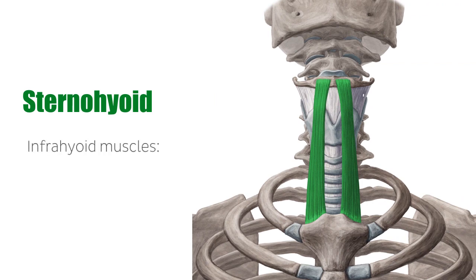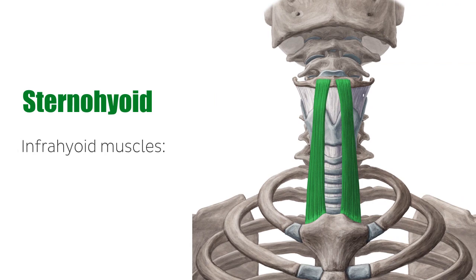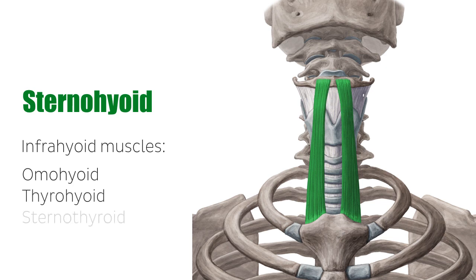The infrahyoid muscles are a group of four muscles under the hyoid bone, attaching to the sternum, larynx, and scapula. They are the omohyoid, the thyrohyoid, the sternothyroid, and the sternohyoid.